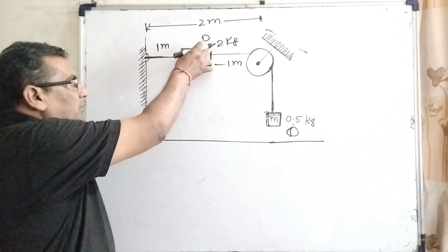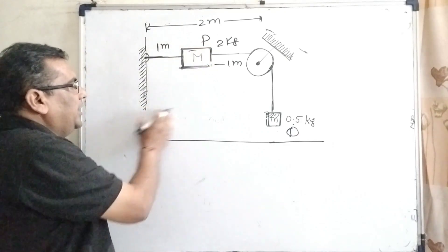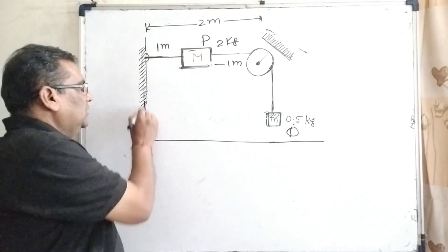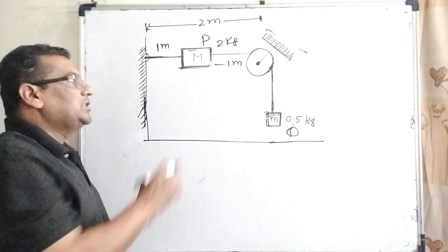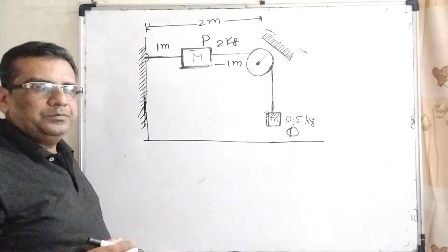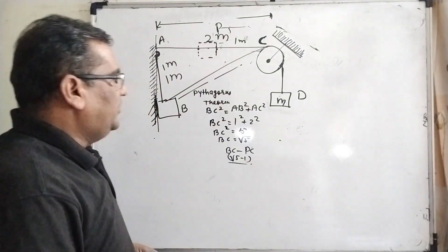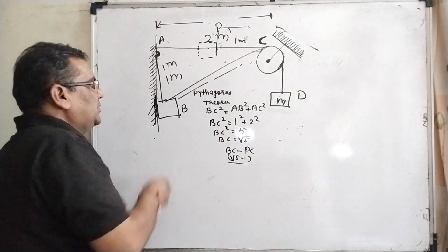this block comes down and hits the rigid wall. We have to find out the speed of this block.